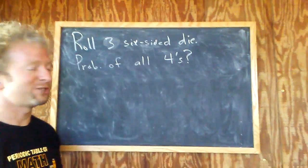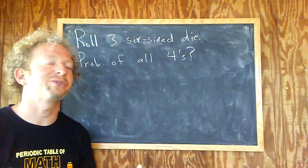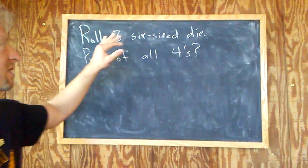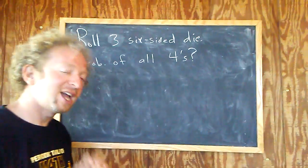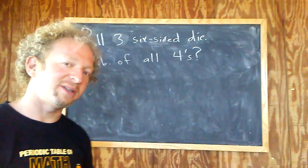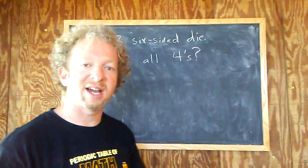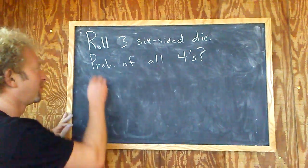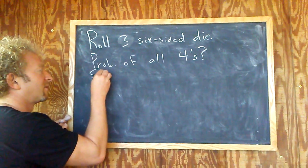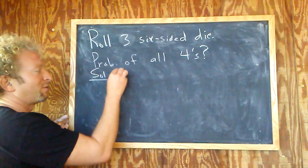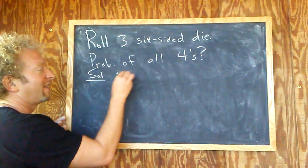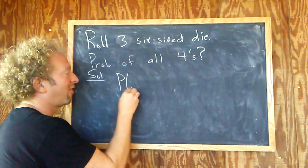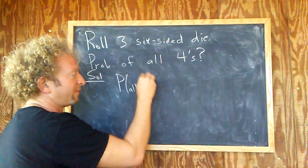We're going to do a simple probability question. We're going to roll three six-sided dice and find the probability of all the dice landing on the number four. So for the solution, we want the probability that they're all fours.